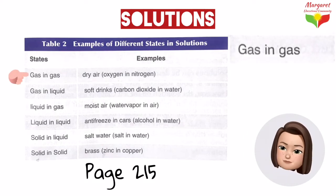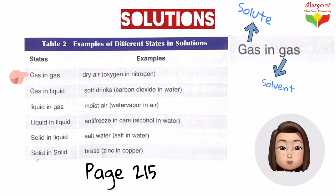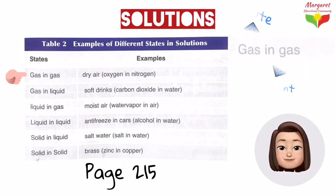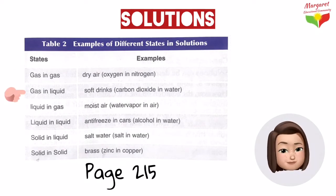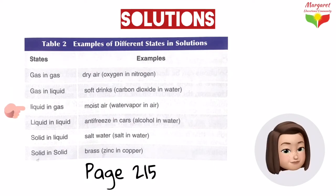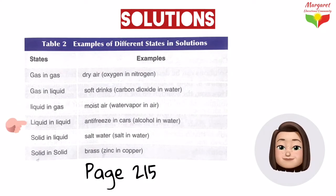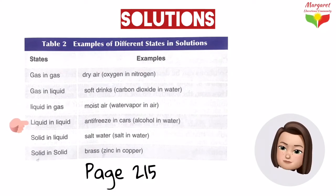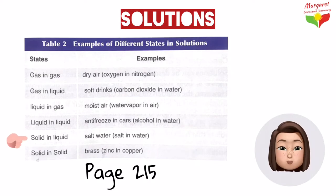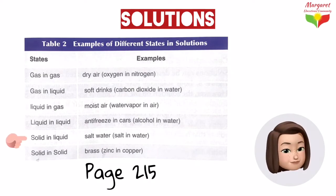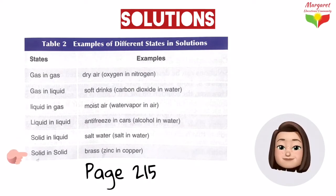For example: gas in gas — where both solute and solvent are gas — such as dry air; gas in liquid, such as soft drinks; liquid in gas, such as moisture; liquid in liquid, such as antifreeze in cars; and solid in liquid, such as salt water; and solid in solid, such as brass.